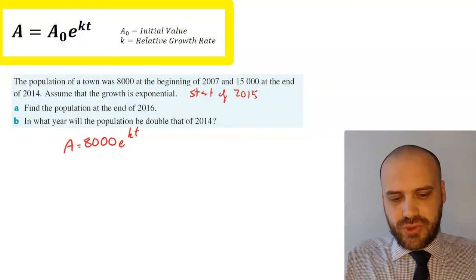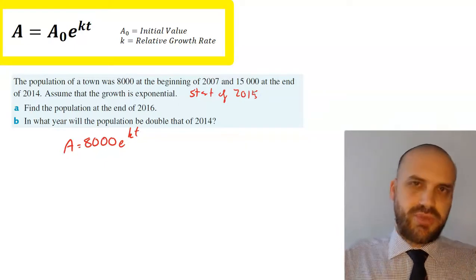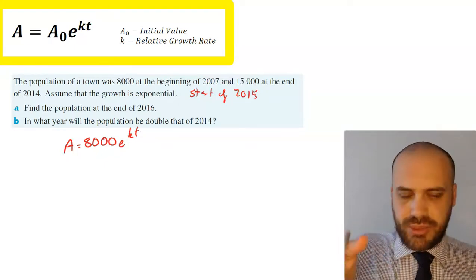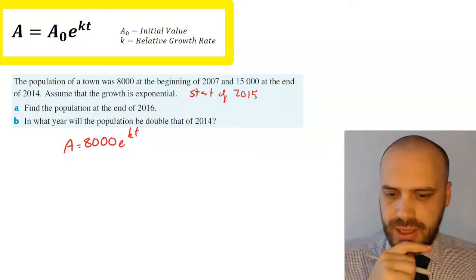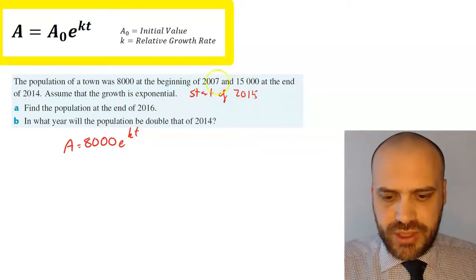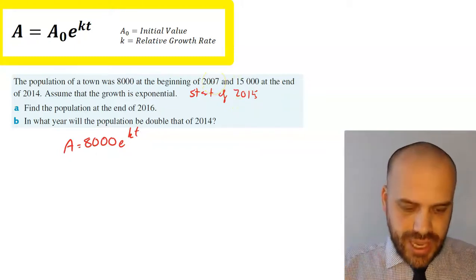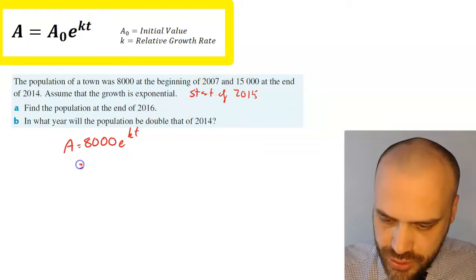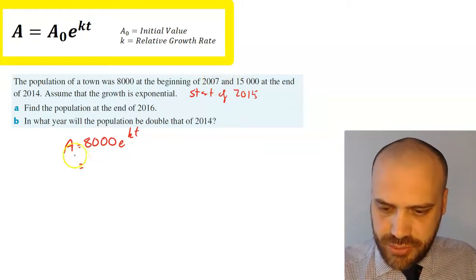The end of 2014 and the start of 2015 are equivalent statements really, we're just talking about midnight on New Year's Eve. So that's obviously 2015 minus 2007, t equals 8 years.